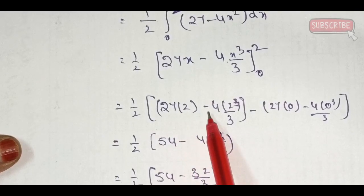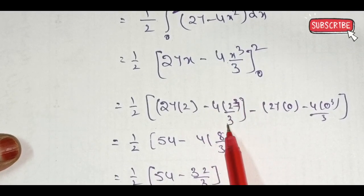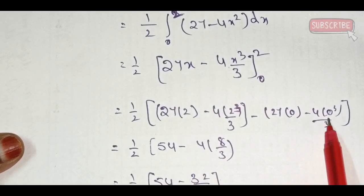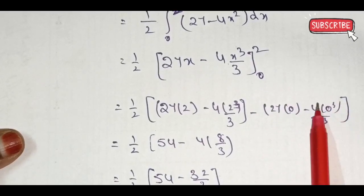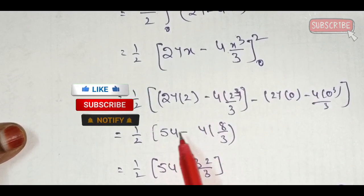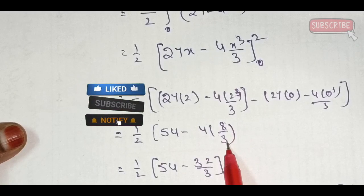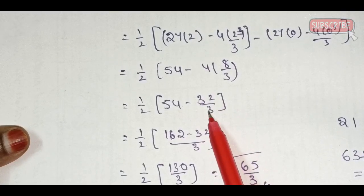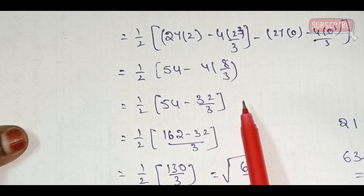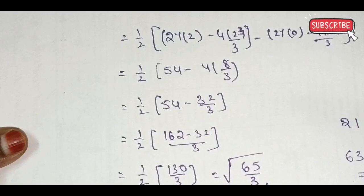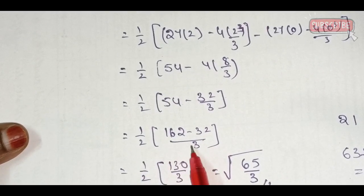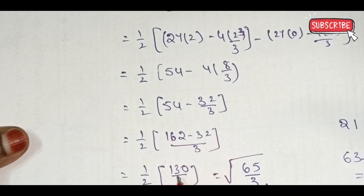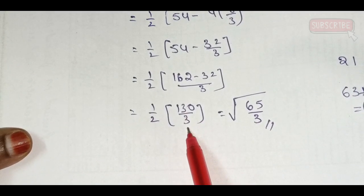Substituting upper limit x = 2: 27×2 minus 4×2³/3, minus lower limit (which gives 0). That is 54 minus 32/3. Multiply by 1/2: half of (162/3 minus 32/3) = half of 130/3 = 65/3.